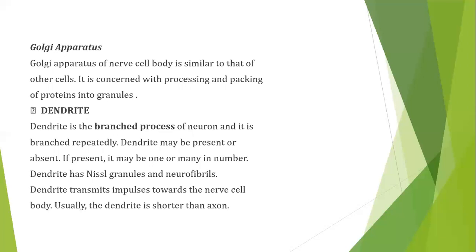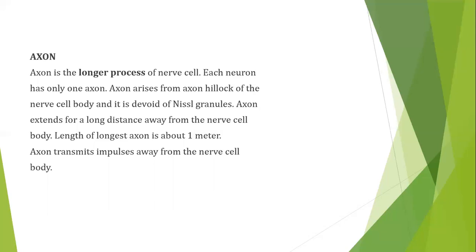Dendrites are branched, short processes that may be one or many in number. They contain Nissl granules and neurofibrils, and transmit impulses toward the cell body. Dendrites are usually shorter than the axon. The axon is the longer process; each neuron has only one axon. It arises from the axon hillock of the nerve cell body, is devoid of Nissl granules, and can extend up to one meter in length. The function of the axon is to transmit impulses away from the nerve cell body.